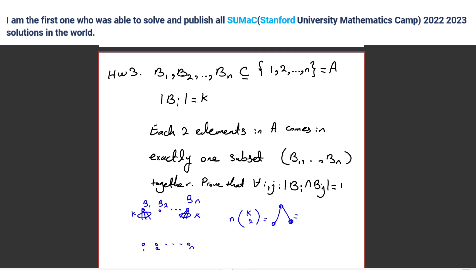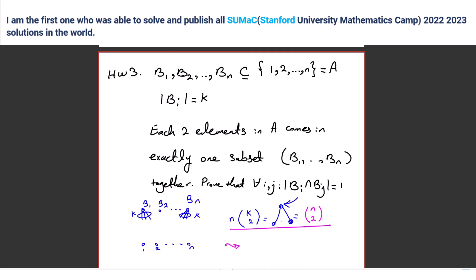Basically, if I have elements one and two and I connect them both to b₁, then when you say n times k choose 2, you're calculating paths with length 2. So if you calculate from here, we have n vertices and for each of them we have k choose 2. But if you calculate from the other side, by the assumption of the problem we get n choose 2, because for each two elements in a, they come in exactly one subset. So simplifying this equation, we get k times k minus 1 equals n minus 1.